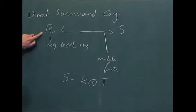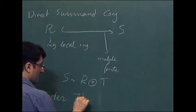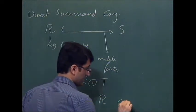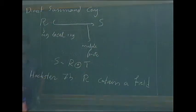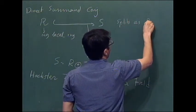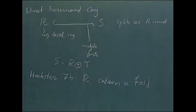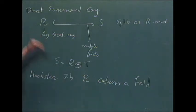Hochster made this conjecture in the 70s, and he proved it for any ring which contains a field. For almost everything in algebra, geometry, or commutative algebra, a good example contains a field. But the question was whether a result works for any ring. For example, consider the local ring Z[x] localized at a prime p and variable x — a local ring of dimension two with characteristic zero, but its quotient field has characteristic p. This is called mixed characteristic.